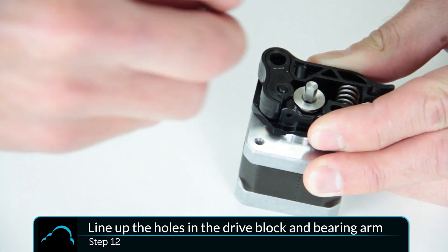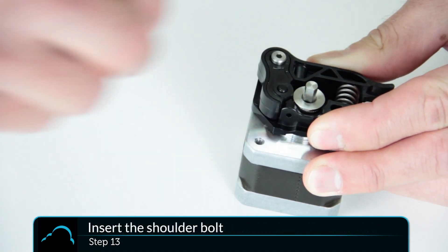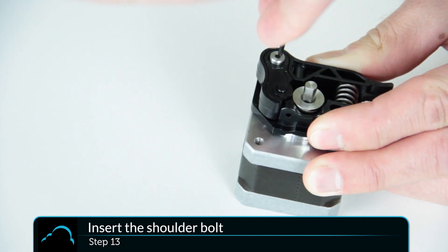Squeeze the drive block and the bearing arm so the shoulder bolt hole lines up, then insert the shoulder bolt using the 2mm hex wrench and tighten it.